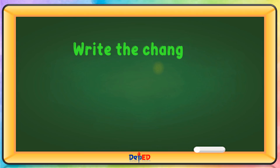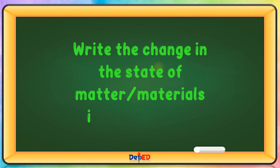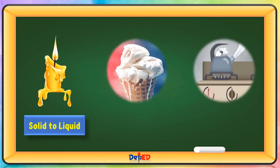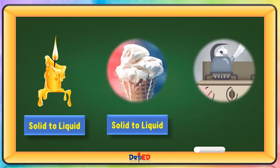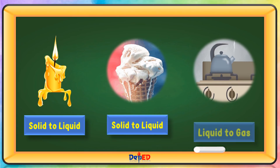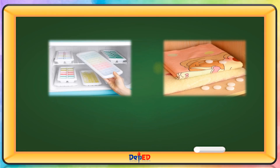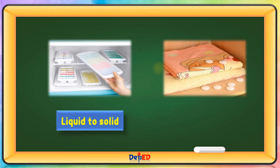Write the change in the state of matter for the materials in the pictures. A candle is solid to liquid. An ice cream is solid to liquid. Water is liquid to gas. An ice cream freezing is liquid to solid. A mothball is solid to gas.